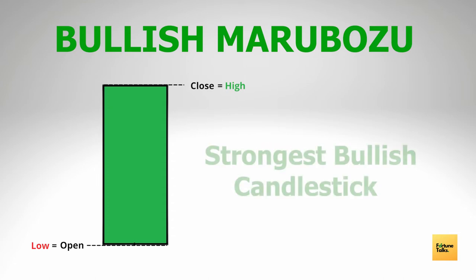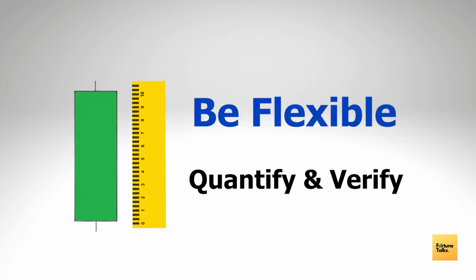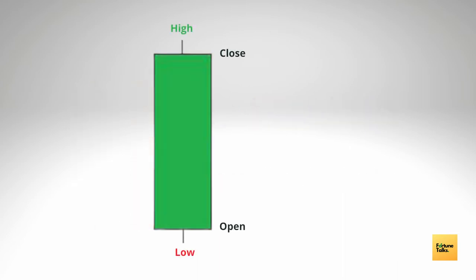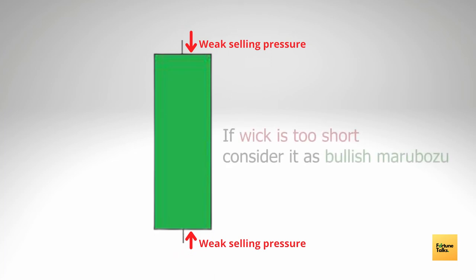In case of a bullish Marubozu, the open and low prices coincide, and the high and close prices coincide, which means there is no selling pressure from the bears. This brings us to the conclusion that bullish Marubozus are the strongest bullish candles we can find on a chart. However, we have to be flexible with patterns in real markets, as patterns generally don't occur exactly as described in textbooks. For example, a green candle with small upper and lower wicks — where the high and low are very close to the open and close — can still be considered a bullish Marubozu because the selling pressure is very weak.